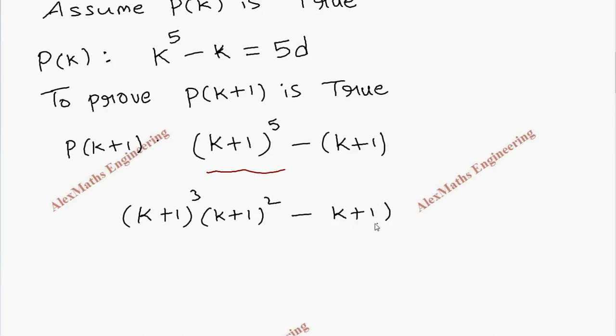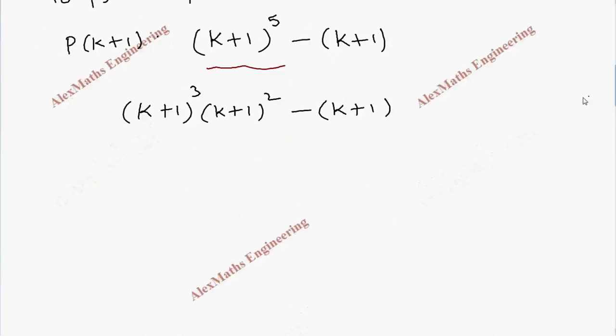Now we are going to apply (a+b)^3 formula: k^3 plus 3k^2 times 1 plus 3k times 1^2 which is 3k, then plus 1. And the second term expansion is k^2 plus 2k plus 1. And the last term is minus k, and I am taking minus inside so minus 1.